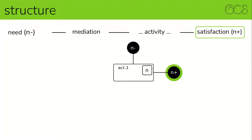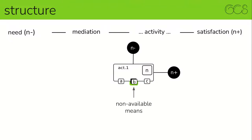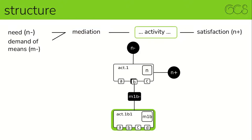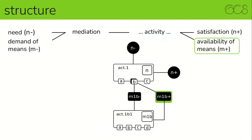To carry out the activity, means are often necessary. But what if these means are not available? In this case, we speak of a demand — M minus. This demand must be mediated again, and an activity has to take place to make the demand available. And finally, the means is available which is necessary to carry out the other activity. A need is always the problem that certain means are not available, and for each activity different means may not be available, and then new activities would again be necessary to meet the demand.